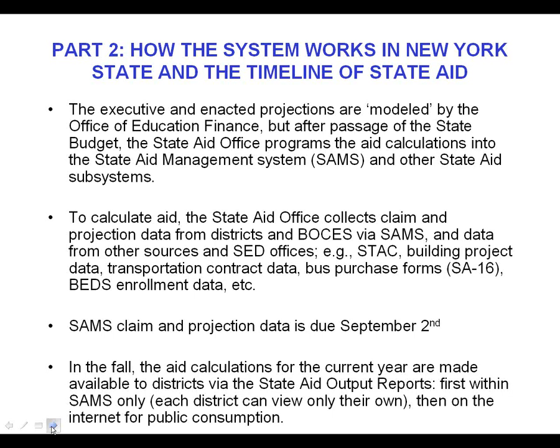We usually don't release the output reports showing your current year aid calculations until around now, or a little earlier some years and a little later other years, depending on various things that might be going on. At first, those output reports are made available to you within your SAMS software. There are essentially two views: when we tell you we've released SAMS output reports in SAMS, you can go in and view them in your software, but the taxpayers and community can't see them — only you can see your own. Then later on, when we're really sure everything's fine and after the November database has been provided to the Division of the Budget and the Legislature, we put them on our website, accessible by the general public via the Internet. So it's really two separate releases.